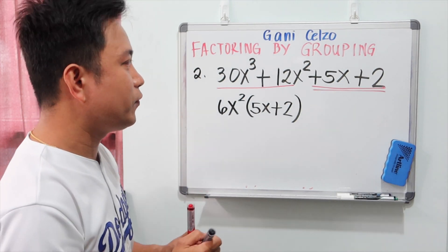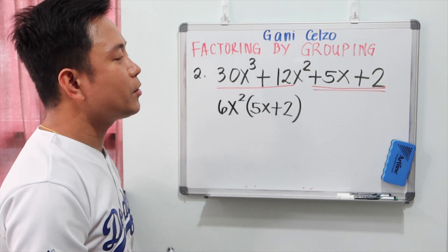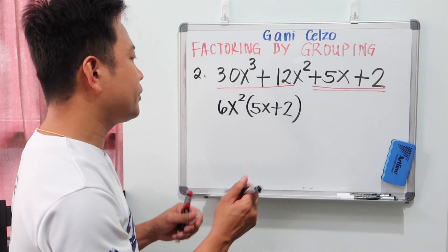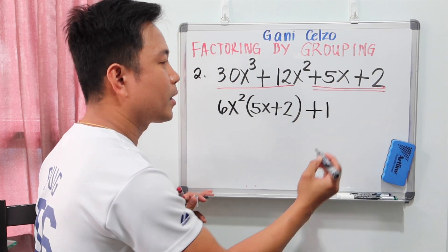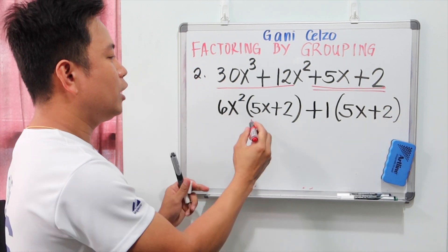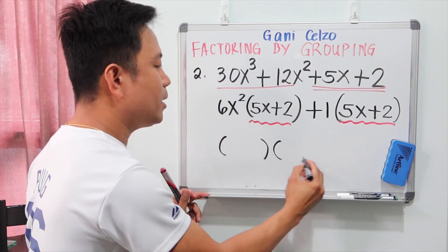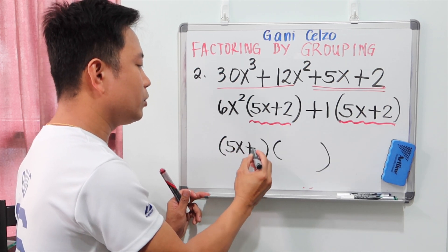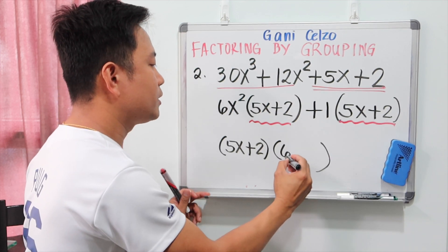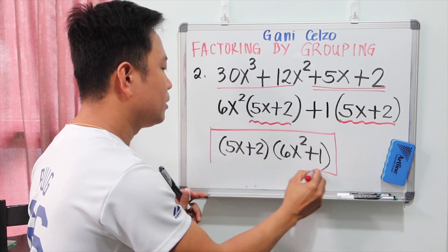For the second group, 5x plus 2, the greatest common factor is simply 1 — there is no GCF other than 1. So we write plus 1 and then copy 5x plus 2. Now we have 5x plus 2 common to both groups. The final answer is (5x plus 2)(6x squared plus 1). That's the complete factored form for this polynomial.